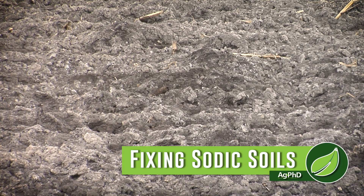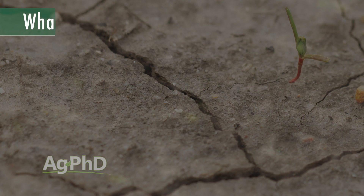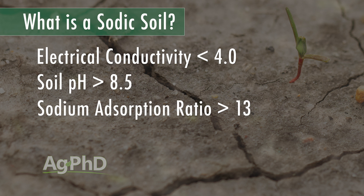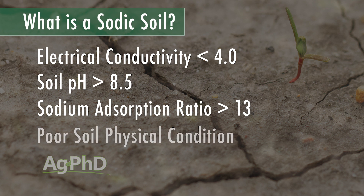How do you fix a sodic soil? Well first we have to talk about exactly what a sodic soil is. A sodic soil just means you've got a bunch of sodium. There is a technical definition: it has electrical conductivity less than 4, a soil pH greater than 8.5, a sodium adsorption ratio greater than 13, and poor soil physical condition. If you've got that, you've got a sodic soil.